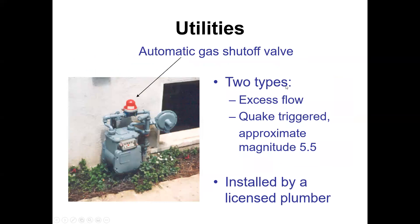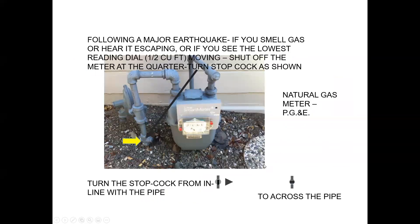Automatic shutoff valves for gas are required if you do any major remodeling. There are two types: excess flow and quake-triggered, triggered at approximately magnitude 5.5. They can be installed by a licensed plumber for about $400. Following an earthquake, if you smell gas, hear it escaping, or see the lowest reading dial moving, shut off the meter at the quarter-turn stopcock — turning it from in-line with the pipe to across the pipe.